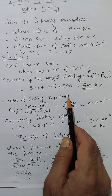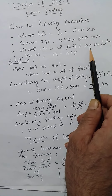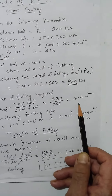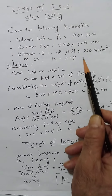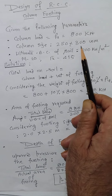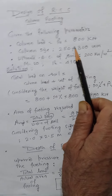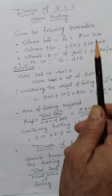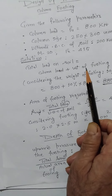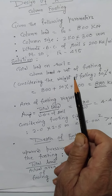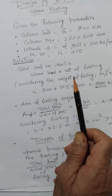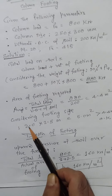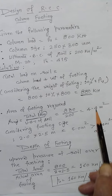The area of the footing can be calculated as total load divided by the bearing capacity of the soil — that is the ultimate bearing capacity. So 880 divided by 200 comes out to be 4.4 meter square. Being a rectangular column, always keep in mind that when the column is rectangle, the footing must also be rectangle. If the column is square, the footing must be square, for even distribution of load over the entire footing. So here I am considering 2 x 2.5, that is 5 meter square, against the required 4.4.